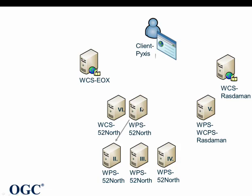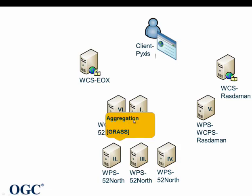This orchestration WPS requests the first WPS in the workflow, which fetches the data given by reference either from the EOX WCS or the Rastaman WCS. It then calculates aggregated data based on the inputs — time series and Earth observation data over different years — aggregated by using the GRASS open source geoprocessing tool.